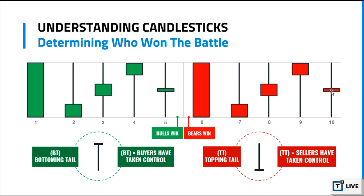Eight and ten are mostly sideways, neutral. Number nine, even though it was a red candle meaning the stock opened here and closed here, the bulls were in control towards the end and forced prices to close near the top — so that's actually a bullish candle. At the bottom, the candle body opened and closed at exactly the same price, but the two candles at the bottom are complete opposites: one is a bottoming tail, which is very bullish, and one is a topping tail, which is very bearish.